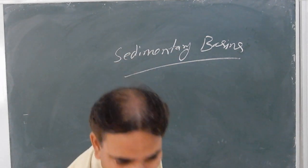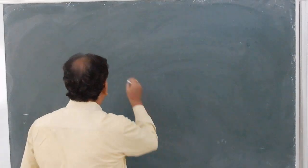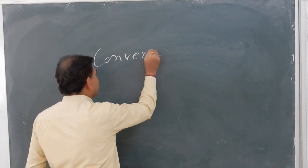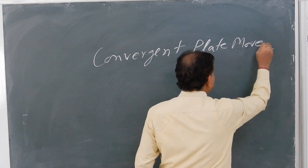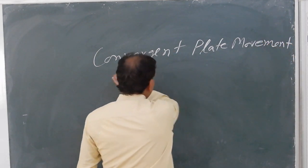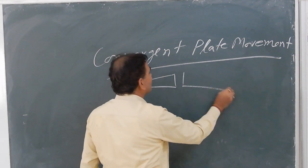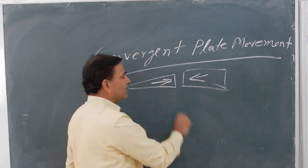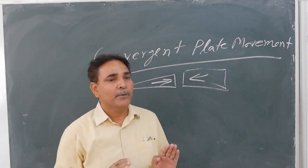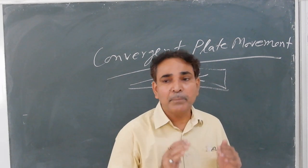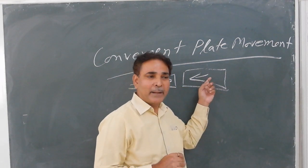First we are going to discuss the sedimentary basins formed by convergent plate movement, when two plates are moving towards each other. There are three combinations: number one, when both plates are continental; number two, when both plates are oceanic; or number three, when one plate is oceanic and the other is continental.